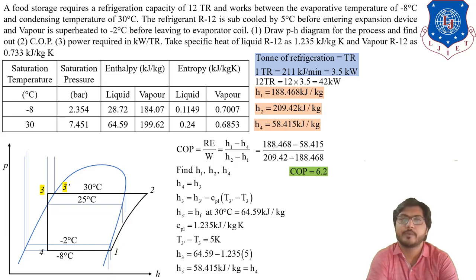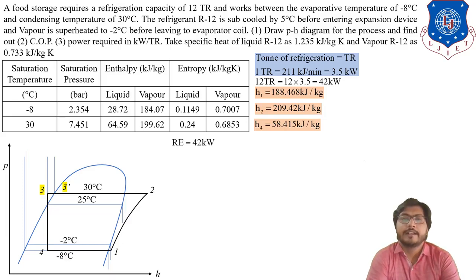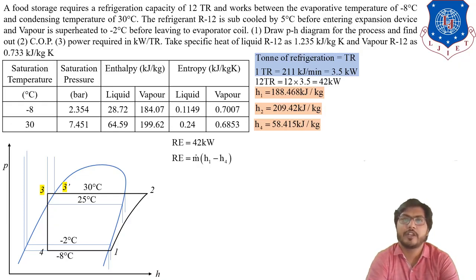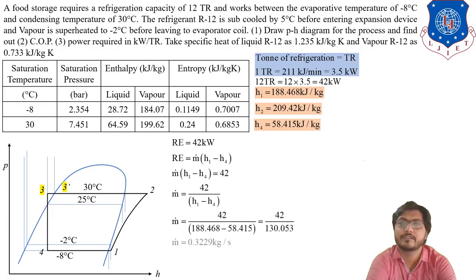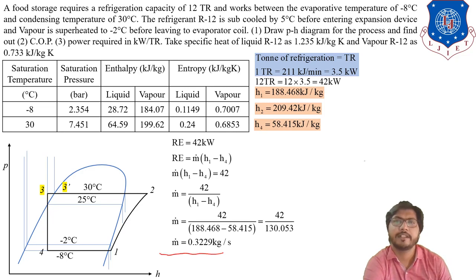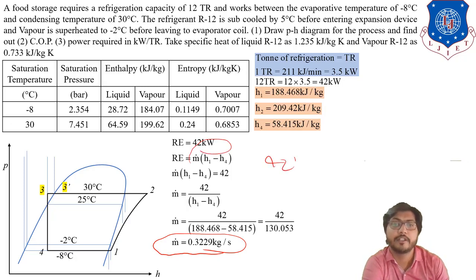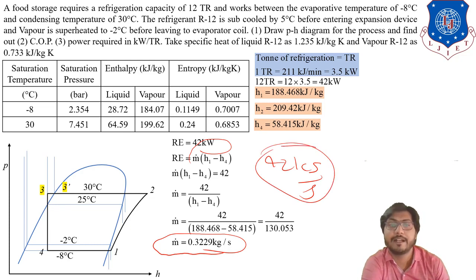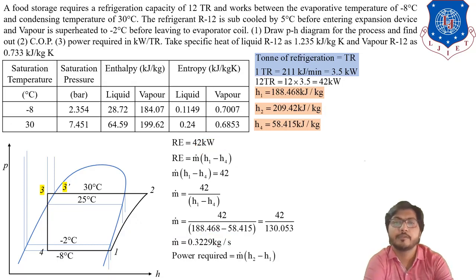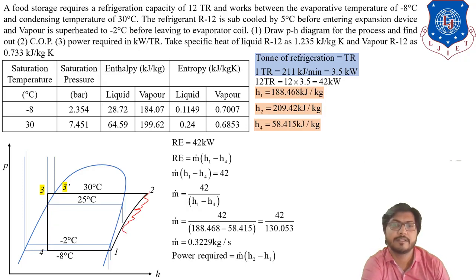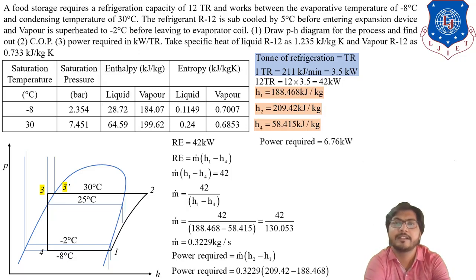Now calculate the COP: COP = (h1 - h4) / (h2 - h1) = 6.2. The refrigeration effect is 42 kW, and using RE = m-dot × (h1 - h4), the mass flow rate m-dot = 0.329 kg/s. This is the flow rate of refrigerant needed to extract 42 kW of heat from the plant. The power required by the compressor is: Power = m-dot × (h2 - h1) = 6.76 kW. Thank you so much.